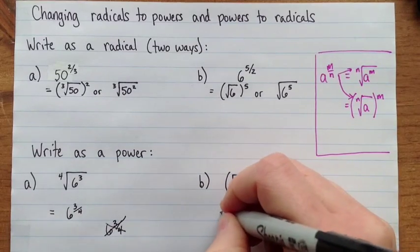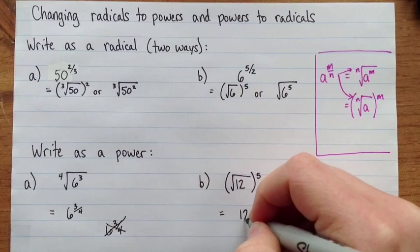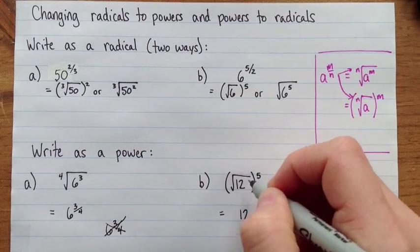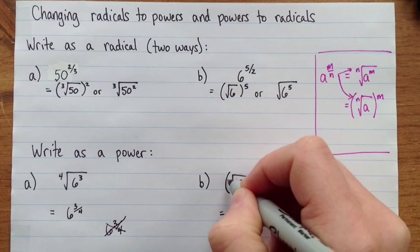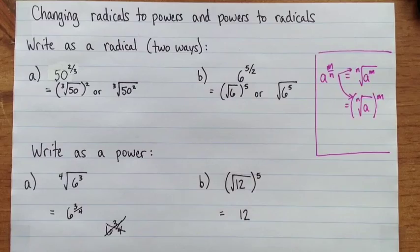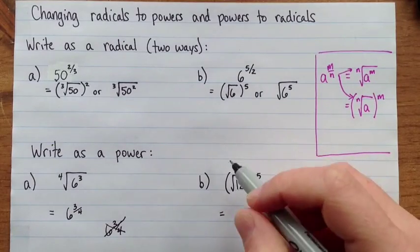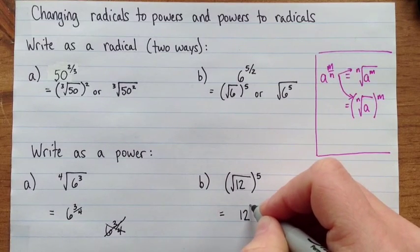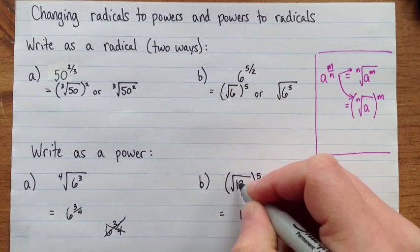Okay, and then here, our base is twelve, and it's going to be to the exponent five over, the denominator will be the number here, the root. And here we're missing a number. And if we've got a root but no number here, that means that it's understood to be a two. So the exponent here is going to be five over two.